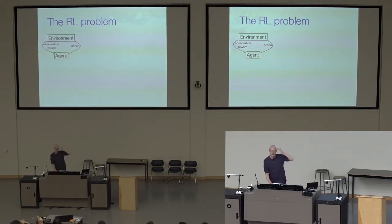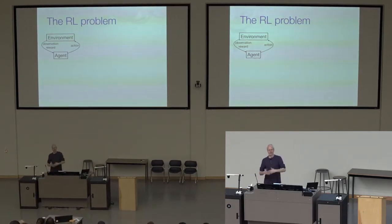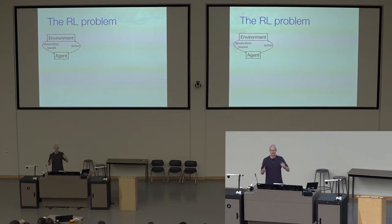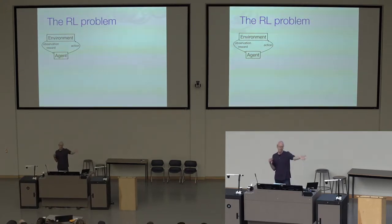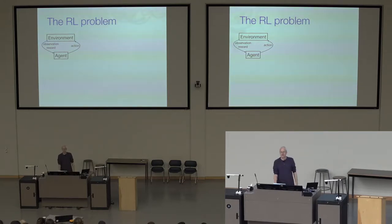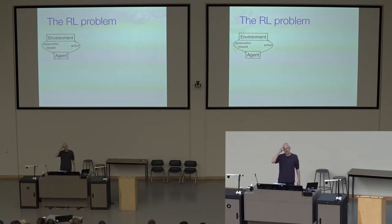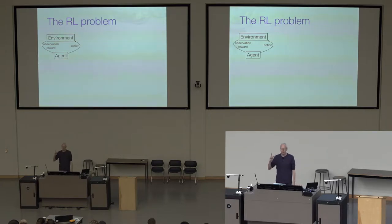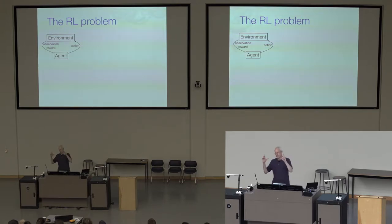Every introduction to RL starts with this picture, and the reason it's dangerous is that there is a deception. This makes the RL problem look simple. It's just so simple - there's two boxes, two arrows, there's a little agent, an environment, it emits some actions, gets some observations and rewards back. Simple problem, should be a simple solution. The difficulty is that it masks an immense array of sub-problems, and it is difficult to really wrap your head around the scope of this problem by only thinking of it at this level of abstraction.